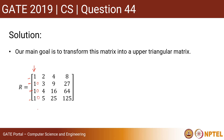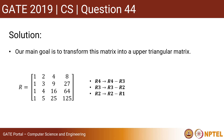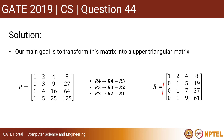We will apply these three transformations to the matrix: row 4 = row 4 minus row 3, row 3 = row 3 minus row 2, and row 2 = row 2 minus row 1. After applying these, we have got all three zeros in the first column.